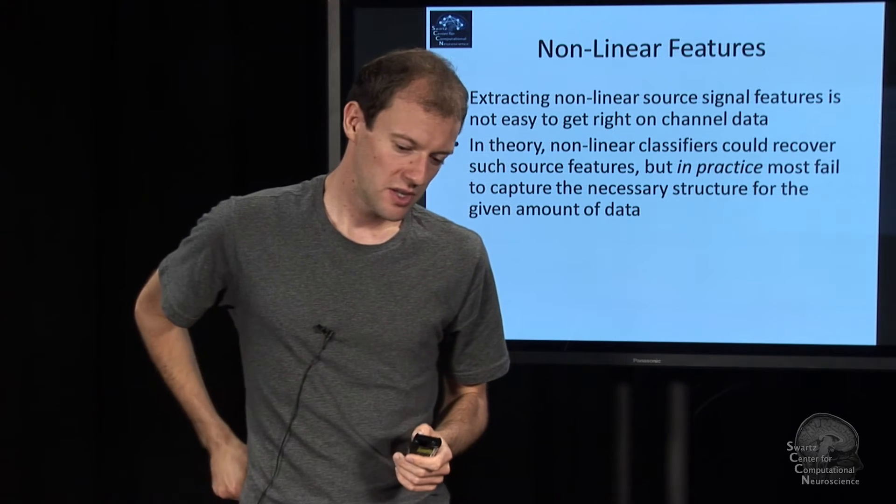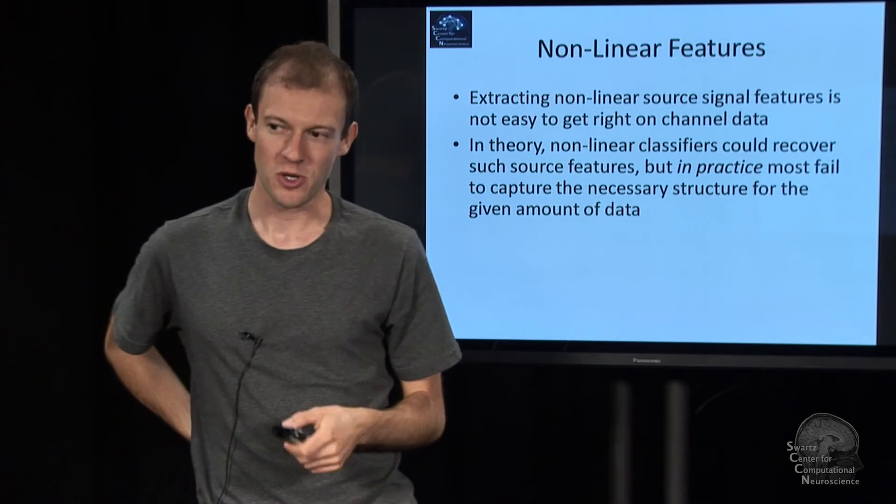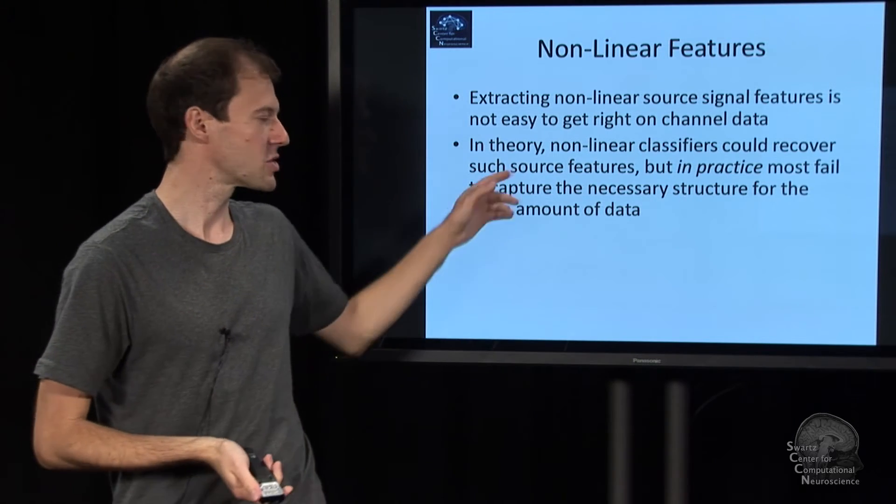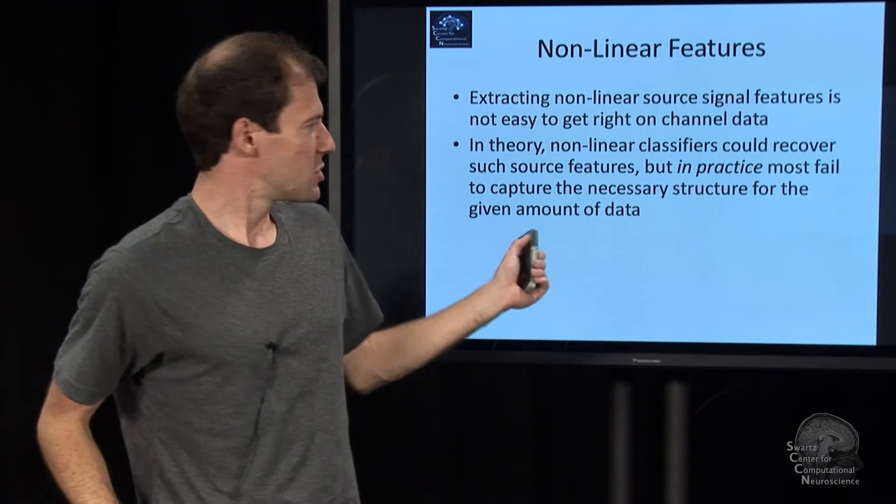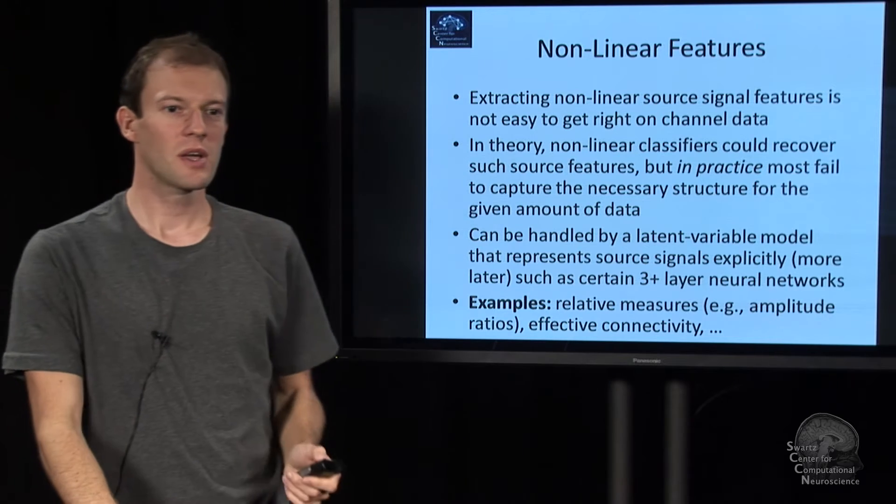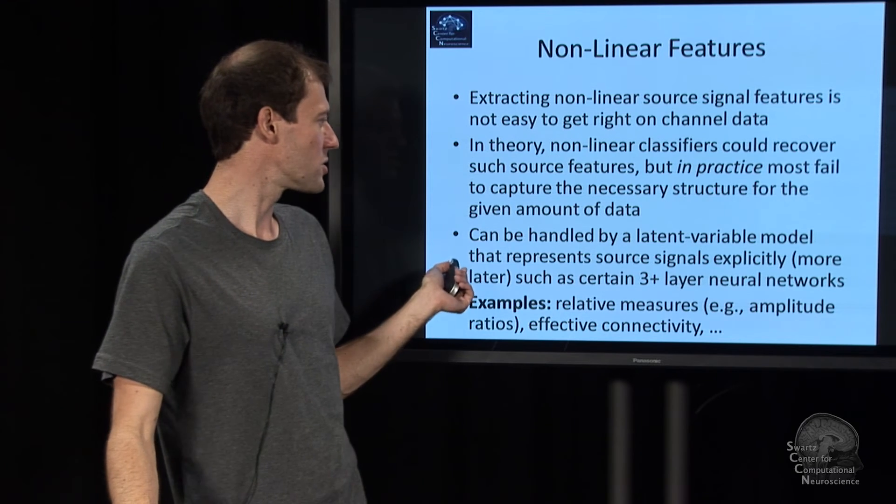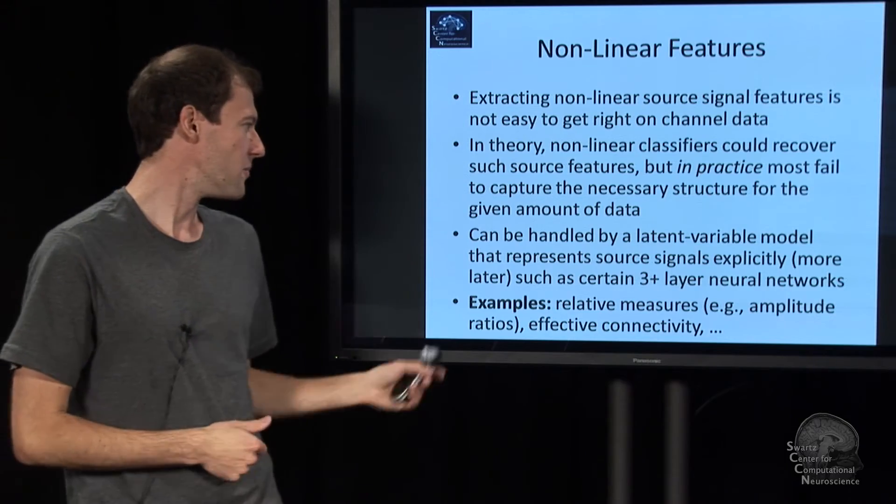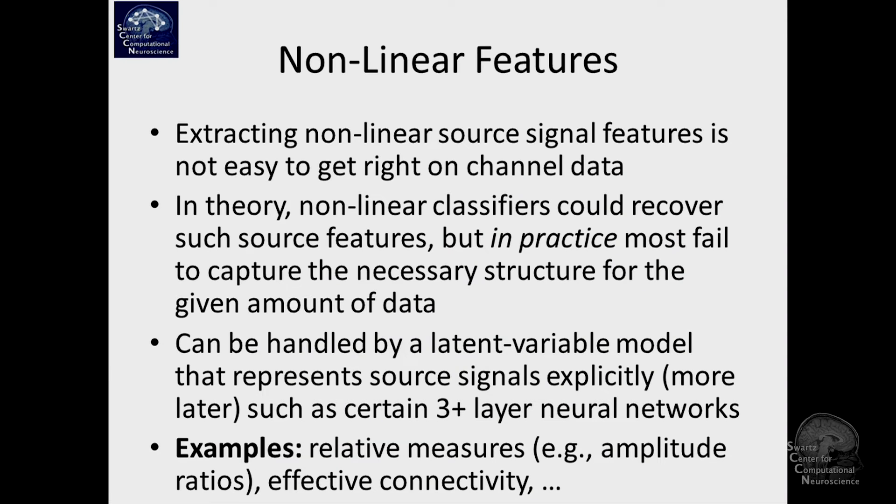So in practice, it's very hard to deal properly with arbitrary non-linear features in EEG. It's different in, say, fMRI, where you don't have as much of a volume conduction problem and so on. But in EEG, it's sort of tricky. Although there's special classes where you can do it. And one condition, for example, that allows you to do it is to learn spatial filters irrespective of the class labels using things like ICA. And then do non-linear features on your independent components and then use a classifier. But I'm going to talk about these things later.